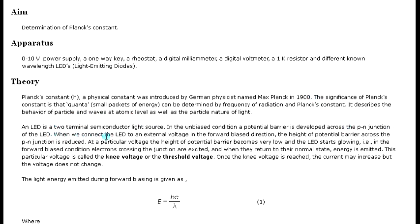When we connect the LED to an external voltage in the forward bias direction, the height of the potential barrier across the p-n junction is reduced. At a particular voltage the height of potential barrier becomes very low and the LED starts glowing. That is, in the forward bias condition, electrons crossing the junction are excited and when they return to their normal state energy is emitted.